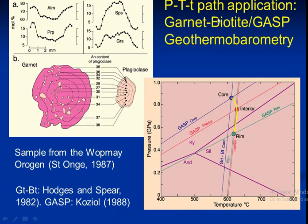PTD path application — garnet-biotite and GASP geothermobarometer samples from WOMP, POROGEN, PISTE HONGE — garnet-biotite from HOPE and SPEAR 1992, and GASP from G988.